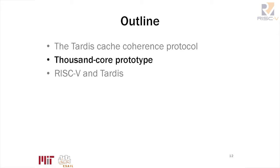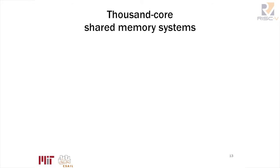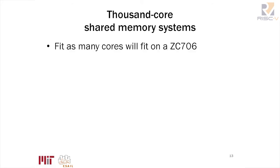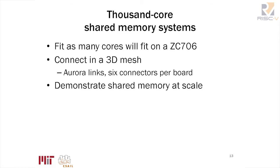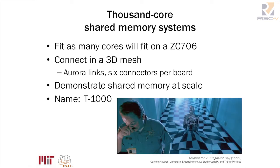Now that we have a scalable protocol, let's try to build something out of it. We want to build a thousand-core system — we'll fit as many cores as we can on ZC706 FPGA boards, connecting them in a 3D mesh. With about 64 FPGA boards and six Aurora links connecting them in northeast, southwest, up, and down directions, we can demonstrate shared memory systems at scale. We're calling it T1000 — the time-traveling antagonist from Terminator 2 — and we'll figure out what to do with the extra 24 cores.